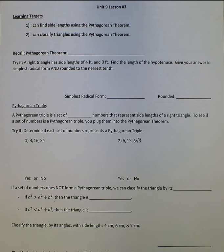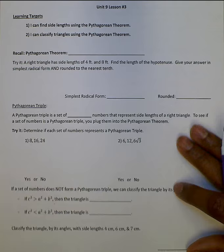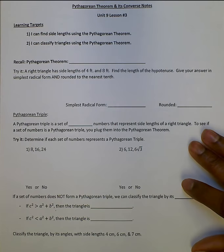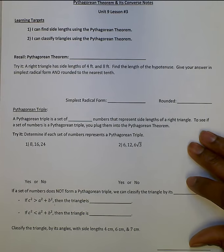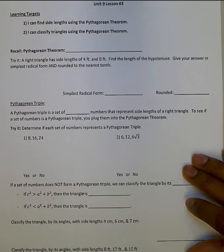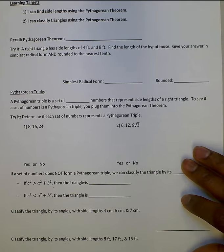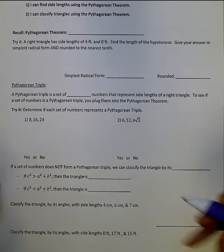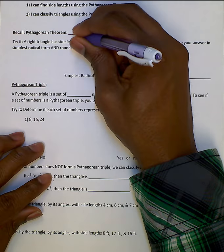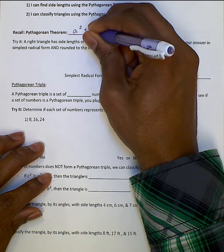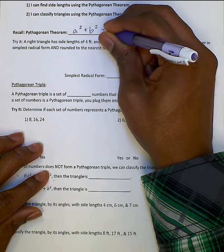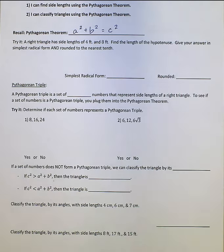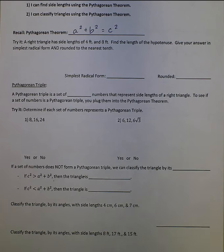Hey guys, Mr. Millicent here. Today we're going to talk about Pythagorean Theorem and its converse. At the end of this video you should be able to find side lengths using the Pythagorean Theorem and classify triangles using the Pythagorean Theorem. Recall that Pythagorean Theorem is A squared plus B squared equals C squared. Remember that we can only use it in right triangles to find sides as it is written.